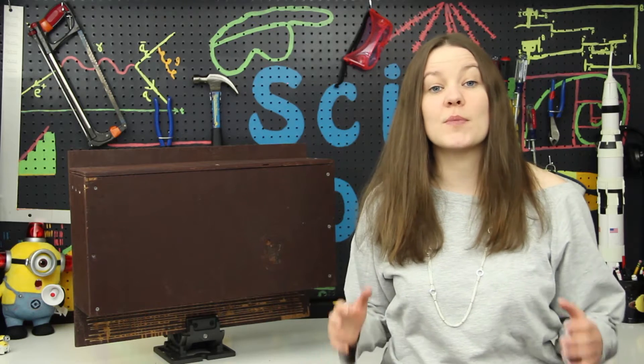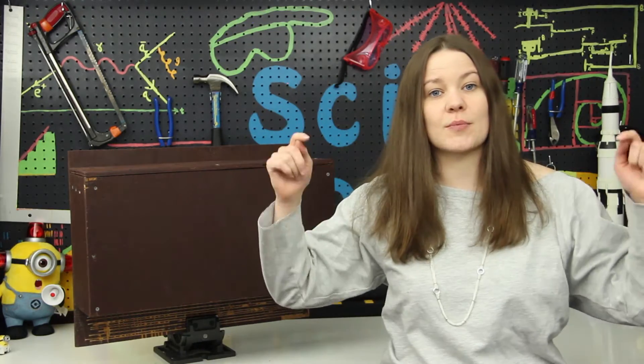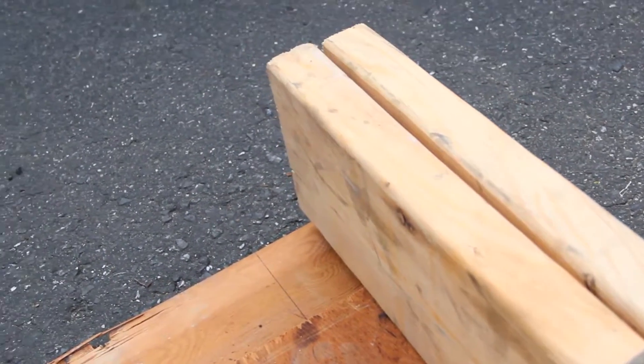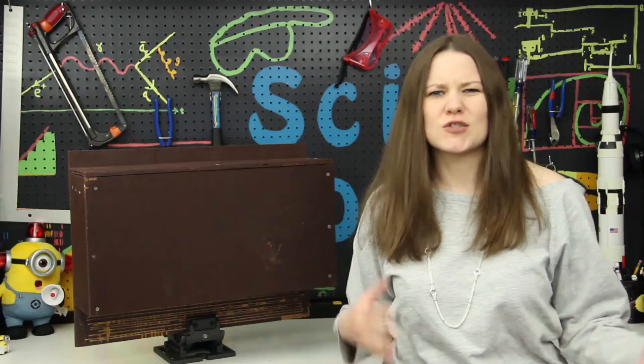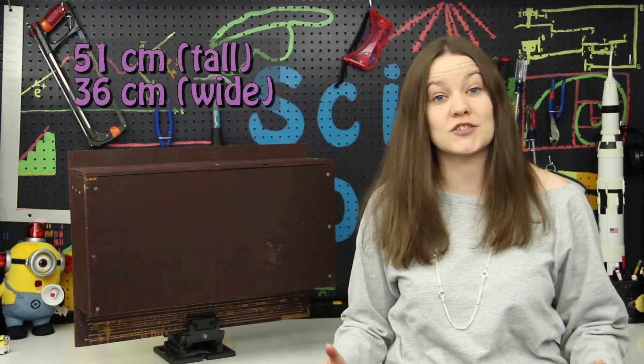Bat boxes should be made from non-pressure treated wood. They come in a variety of sizes and designs so we've put a bunch of the plans down in the description below. We used some scrap wood we had from other projects so ours is a little bit different in size, but yours should be at least 20 inches tall and 14 inches wide.